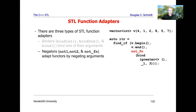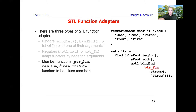Negators take the output of other functors and negate them, so true becomes false and so on. The third category is the member function or pointer-to-function adapters, like ptr_fun, mem_fun, and mem_fn. These allow functors to be class members, and we'll see some really fun examples with those as well.